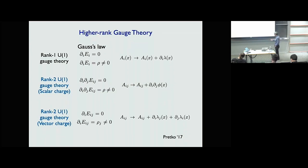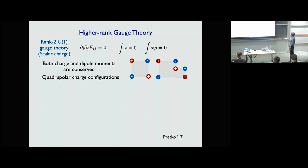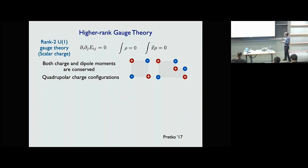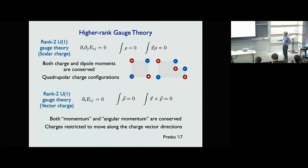The reason this construction is interesting is that for the scalar charge Gauss law, not only is total charge conserved, but the dipole moment is also conserved — two conservation laws. For the vector charge theory, total charge is conserved, but an additional quantity is also conserved. Because of this, the motion of charges is restricted: charges can only move along the charge vector direction and cannot move in the perpendicular direction. This simple generalization of electromagnetism already generates mobility restrictions.